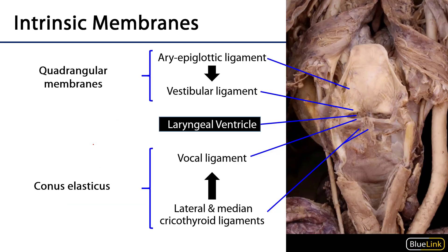Taking a larger view: we can see the aryepiglottic ligament and fold, and the vestibular ligament and fold — forming the quadrangular membrane on one side. Below that are the lateral cricothyroid, medial cricothyroid, and vocal ligament. The space between the quadrangular membrane structures and the conus elasticus structures is known as the laryngeal ventricle. Above the laryngeal ventricle is the rima vestibuli, and below is the rima glottidis, with the infraglottic cavity further below.